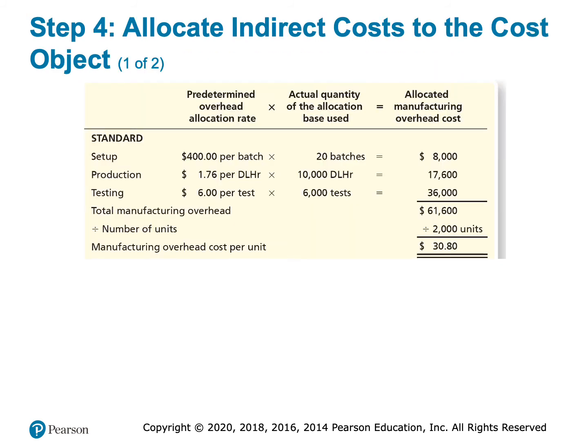Now it's time to allocate. The standard model used 20 batches, so at the rate of $400 per batch multiplied by 20 batches, the standard model gets $8,000 of the setup cost. Production uses 10,000 hours for the standard model at $1.76 per hour, which is $17,600 of the production cost allocated to the standard model. Testing uses 6,000 tests at $6 per test, so that's $36,000 of the testing overhead allocated to the standard model. Adding that up, total overhead allocated to the standard model is $61,600. We expect to make 2,000 units of the standard model, so that comes out to $30.80 per unit.